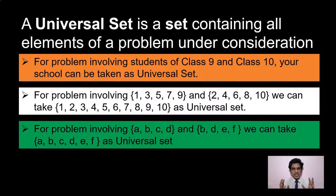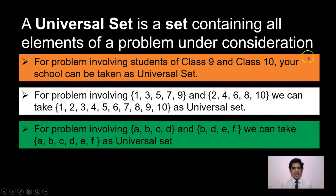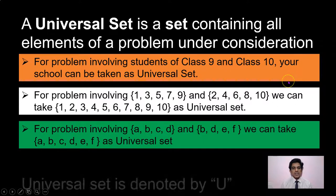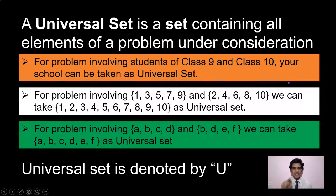Universal Set is a set with all the elements of a particular problem. This Universal Set is written with the letter U. Now we are discussing how to draw sets using Venn Diagrams.